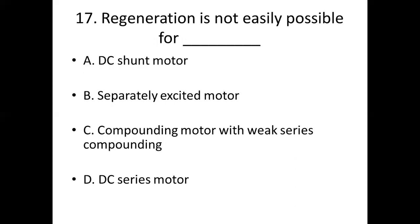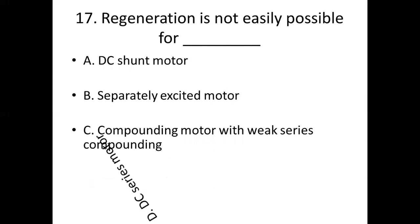Seventeenth bit. Regeneration is not easily possible for dash. Option A: DC shunt motor. Option B: separately excited motor. Option C: compounding motor with weak series compounding. Option D: DC series motor. Answer: Option D, DC series motor.